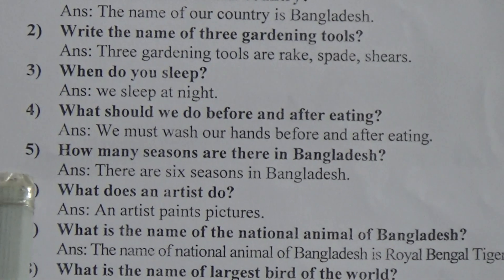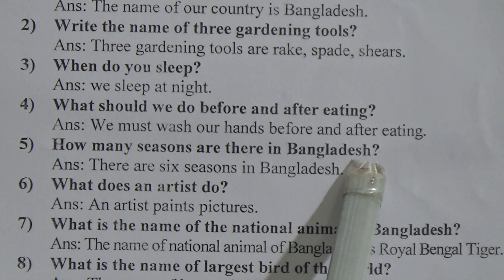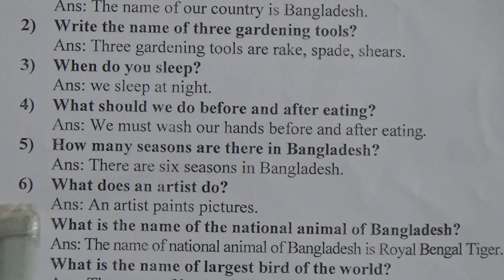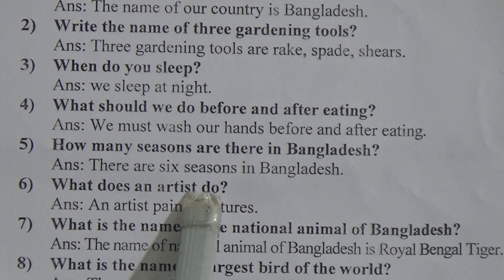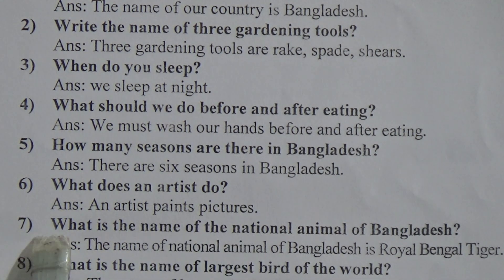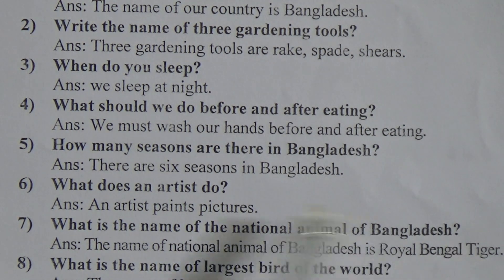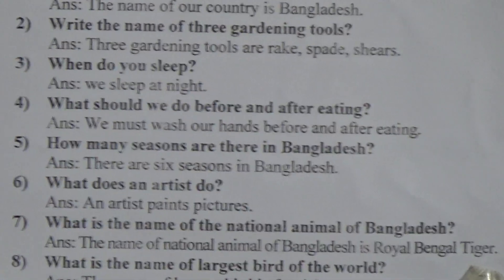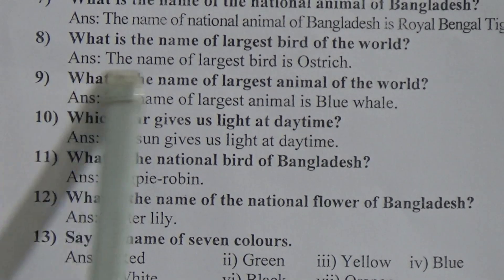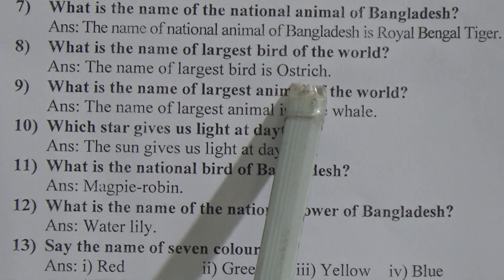Five number: how many seasons are there in Bangladesh? There are six seasons in Bangladesh. And six number: what does an artist do? An artist paints pictures. Seven number: what is the name of the national animal of Bangladesh? The name of the national animal of Bangladesh is Royal Bengal Tiger. And eight number: what is the name of the largest bird of the world? The name of the largest bird is ostrich.